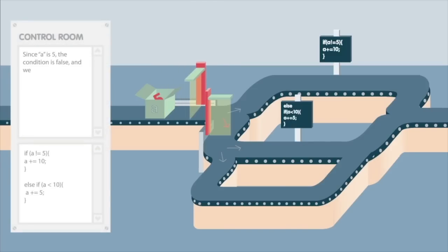Since A is 5, the condition is false, and we are sent to the second condition check. This condition is else if A is less than 10. As before, if the condition is true, we are sent down the first path, and if it is false, we are sent down the second.